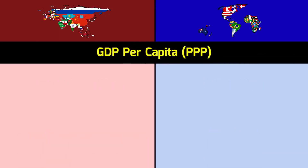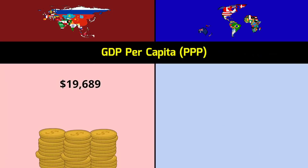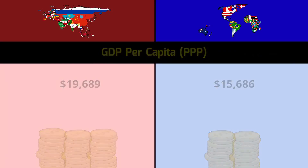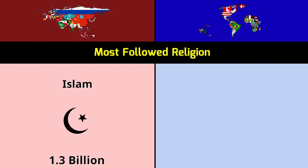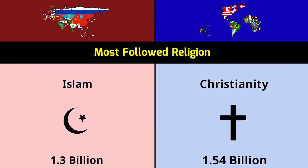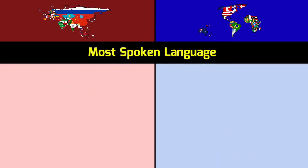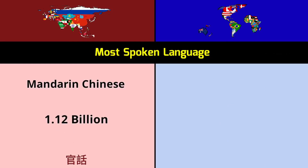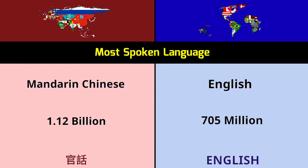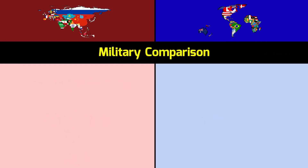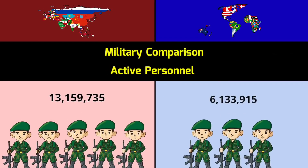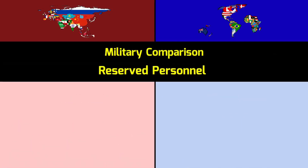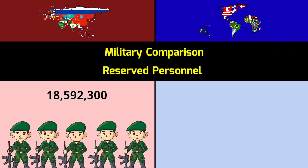GDP per capita PPP: Asia $19,689 vs Rest of World $15,686. Most followed religion — Asia: Islam 1.3 billion; Rest of World: Christianity 1.54 billion. Most spoken language — Asia: Mandarin Chinese 1.12 billion; Rest of World: English 705 million. Military comparison — active personnel: Asia 13.15 million vs Rest of World 6.13 million; reserve personnel: 18.5 million vs 6.4 million.